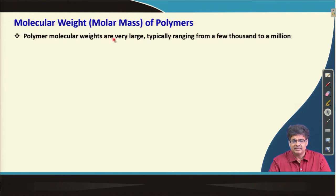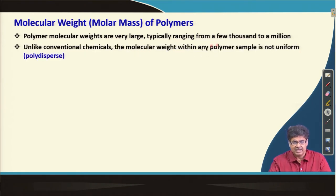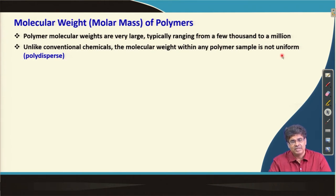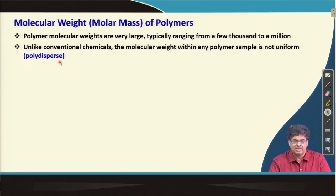Polymer molecular weights are very large, typically in the range of a few thousands to a million. Unlike conventional chemicals, the molecular weights of polymers in a particular sample are different. For example, if I take a benzene bottle, all the molecules are the same, but if I take a polystyrene bottle, the molecular weights of the polystyrene chains are not the same. All polymer molecules present in that bottle are not identical — they are not uniform, and we call that a polydispersed sample.